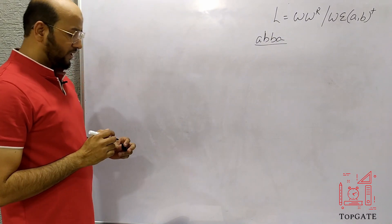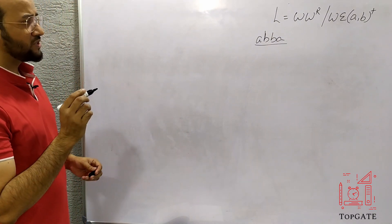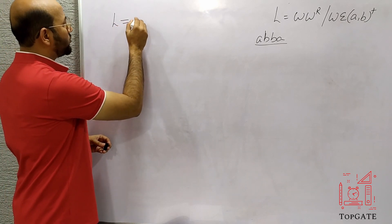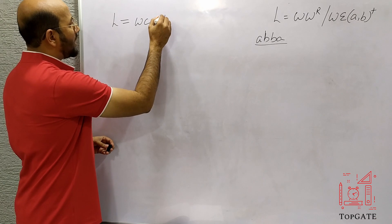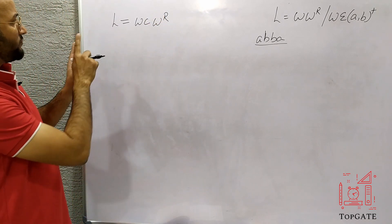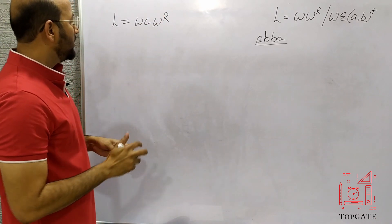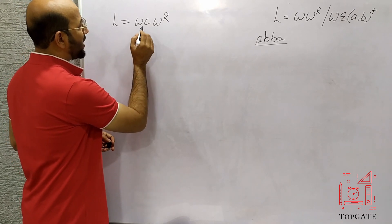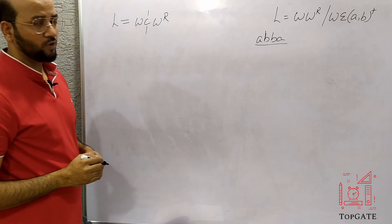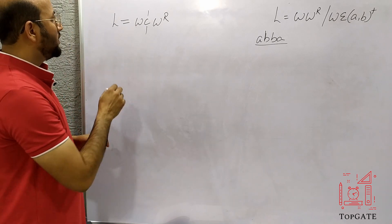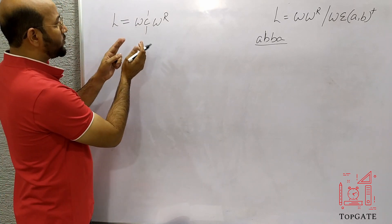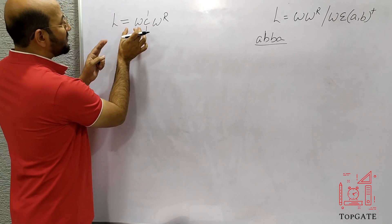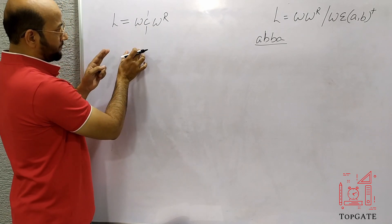If you go back to my previous videos, we have already discussed a similar kind of question — that was to design a PDA for the language L equal to WCW^R. Now what is the difference between this one and that one? In that one, we have a separator C between W and W^R.